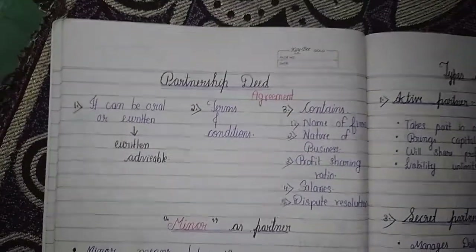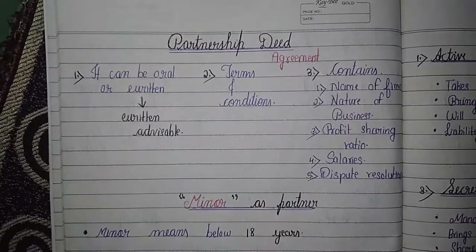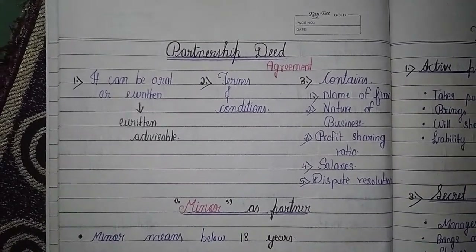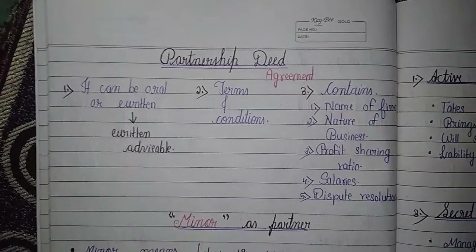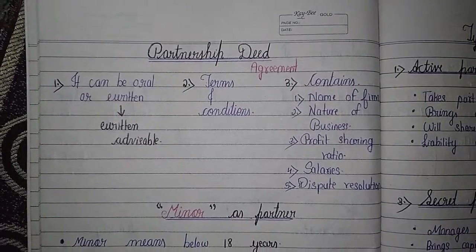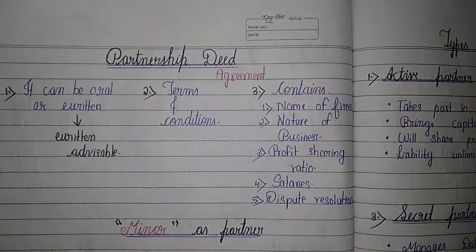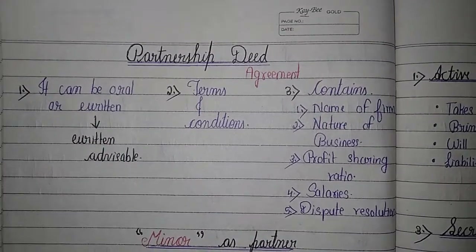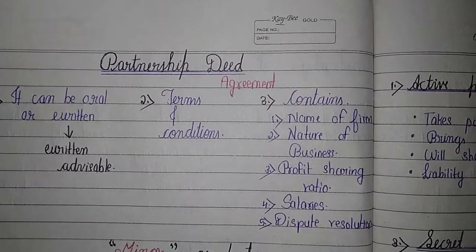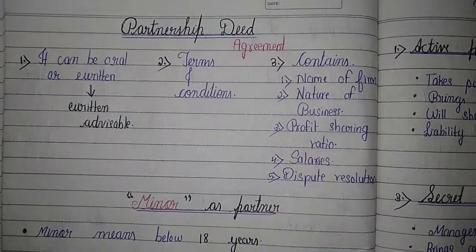Now, partnership deed — deed means agreement. An agreement should be made to start a partnership. It can be oral or written; you can make an oral agreement or a written one with your partner, but written is advisable. The deed must include terms and conditions. What should be contained in the agreement: name of the firm, nature of business, and profit sharing ratio.